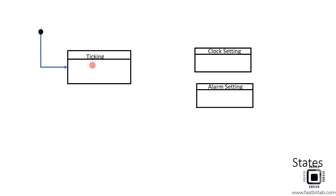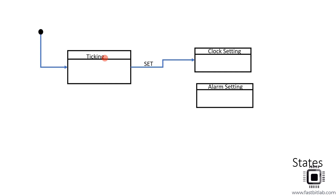Let the ticking state be our initial state. Whenever you give power to the application, it will be in ticking mode showing the current time to the user. When the application is in ticking mode and the user presses the SET button, the application's state changes to clock setting because the user wants to do clock setting.